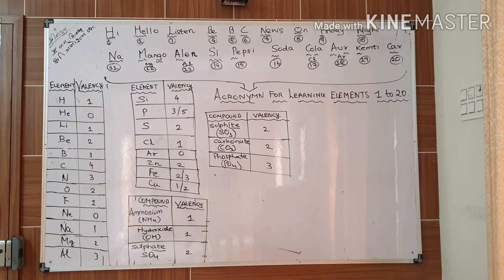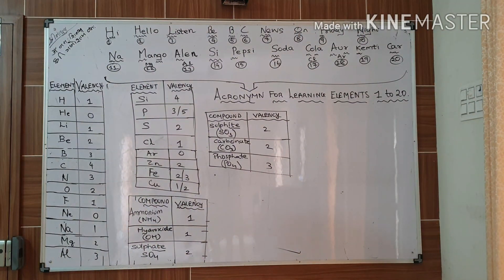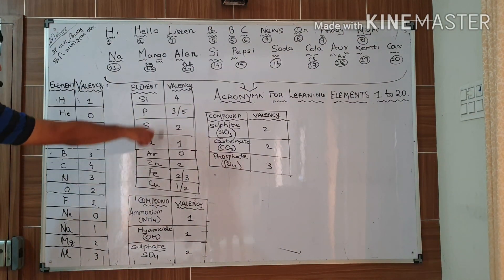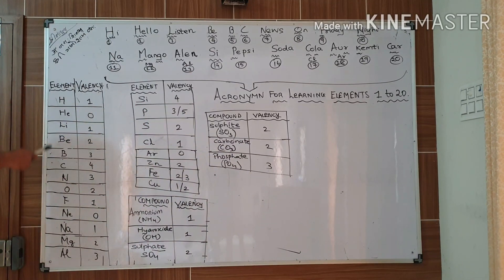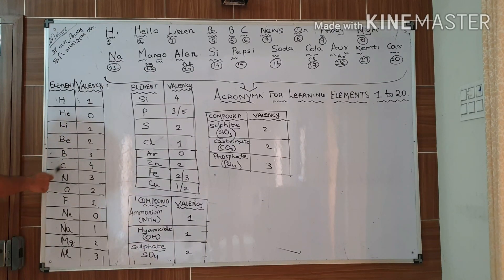So what will be the valency? I have prepared a table to remember the valency. Starting from hydrogen, whose atomic number was 1, valency is also 1. Helium 0, lithium 1, beryllium 2, boron 3, carbon 4, nitrogen 3, oxygen 2, fluorine 1, neon 0. So again the pattern is repeated for sodium.